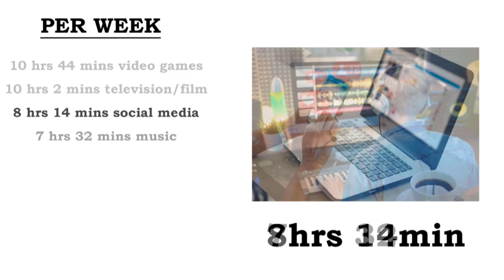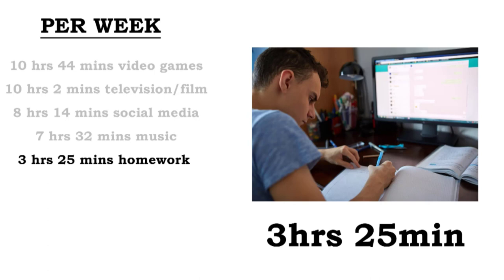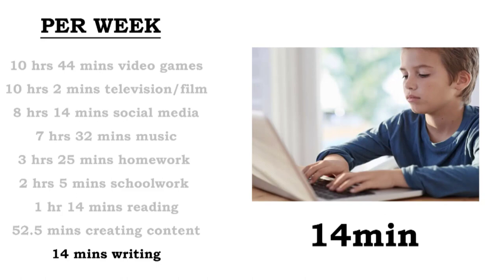10 hours 44 minutes playing video games. 10 hours 2 minutes watching television or film clips. 8 hours 14 minutes scrolling social media. 7 hours 32 minutes listening to music. 3 hours 25 minutes doing homework. 2 hours 5 minutes doing school work. 1 hour 14 minutes reading for pleasure. 52 and a half minutes creating digital content. And a whopping 14 minutes writing for pleasure.